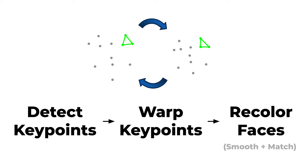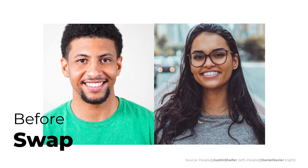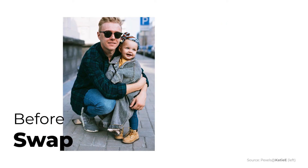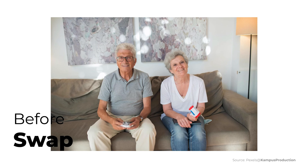And that's it — this 3-step algorithm produces the same face swaps you've seen all over the web. Here's before the swap and here's after the swap. Let's see two more examples: before the swap on the left, and after the swap on the right. And one last example — before the face swap, focus on the eyeglasses, and after the face swap. And now you know how face swaps work.